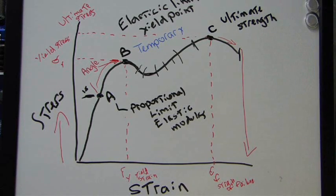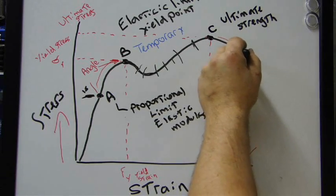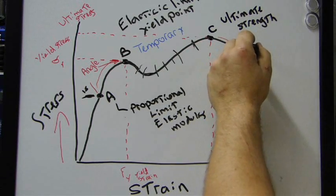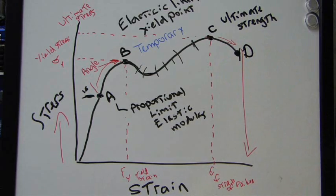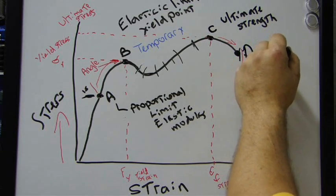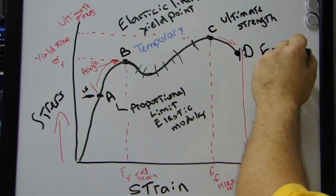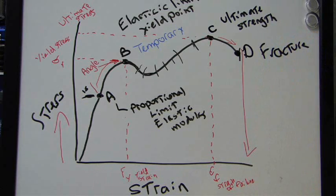We also have the final point on a stress strain diagram, right here. And I'll just simply label this 1D. And this is where the fastener or the threads would fracture. Right there.